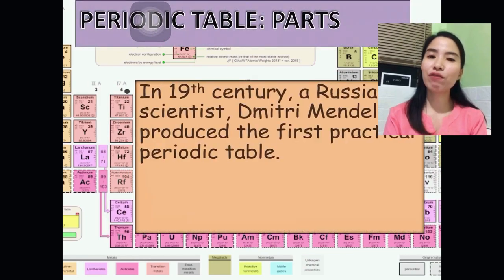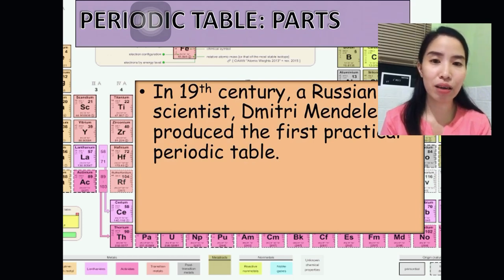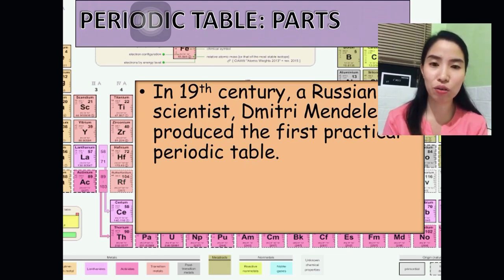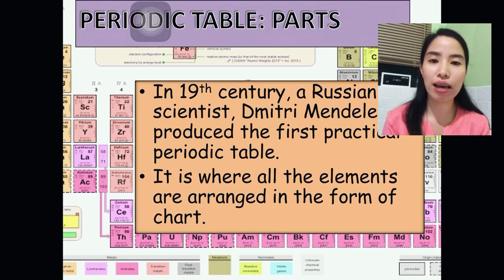So, let me give first a short history about Periodic Table. So, the first practical Periodic Table is produced by Russian scientists in the 19th century, Timothy Mendeleev. So, what's the purpose or what is the use of it? It is a tool where all the elements are arranged in the form of chart.